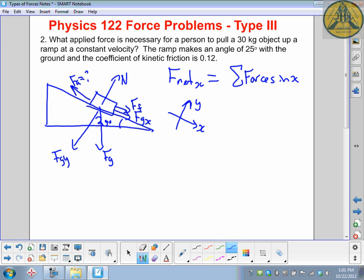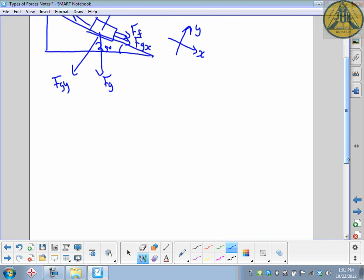Let's write out the net force equation. F_net_x equals applied force in the x direction, plus the force of friction, plus the force of gravity in the x direction. Net force is zero. That's easy if you remember that anything moving at a constant velocity has a zero net force on it.